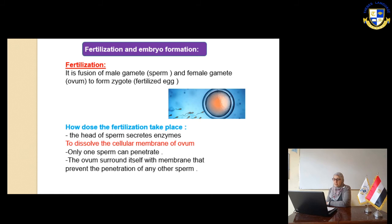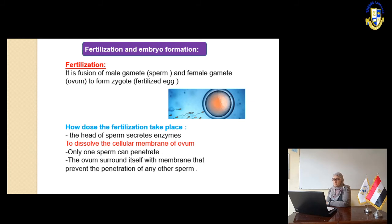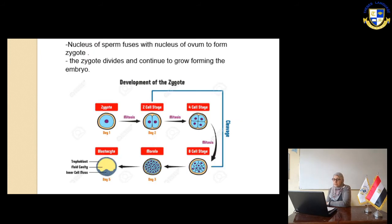Slide number 12: Fertilization and embryo formation. Fertilization is the fusion of the male gamete (sperm) with the female gamete (ovum) to form the zygote, or fertilized egg. Millions of sperm can enter, but only one can penetrate the ovum. The head of the sperm secretes an enzyme to dissolve the cell membrane of the ovum. Once one sperm penetrates, the ovum surrounds itself with a membrane to prevent penetration by any other sperm. The nuclei of the sperm and ovum fuse to form the zygote, which then divides and continues to grow into an embryo.